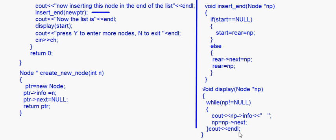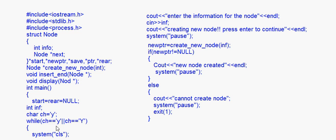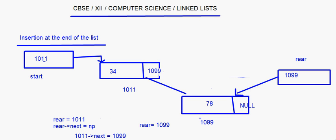Then going back to the main method — press y to enter more nodes. If the user wants to enter more nodes, we press y and go back to the loop in the main method while choice is equal to y. Then create one more node and that node will again be inserted in the same manner. This is how insertion at the end of the linked list is done. With that I'll come to the end of this session. Bye.